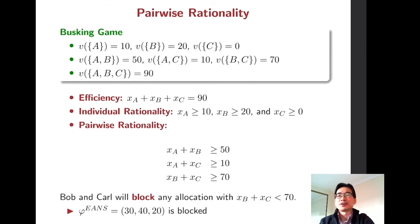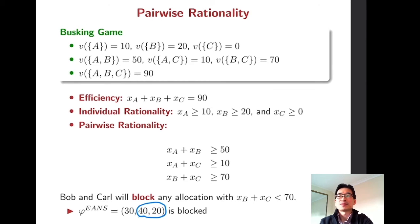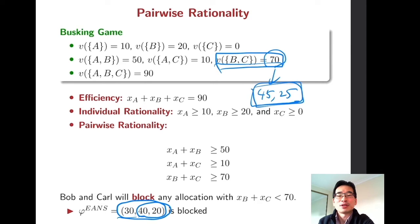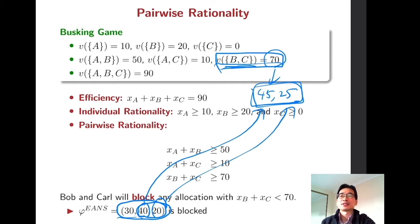However, in the equal allocation of non-separable value, B and C jointly receive just 60. That means B and C can be better off by blocking this particular allocation to form a two-person coalition. For instance, they can split the payoff they generate — 70 — as 45 and 25, which is feasible within this coalition, so B and C both can be better off by blocking this allocation.